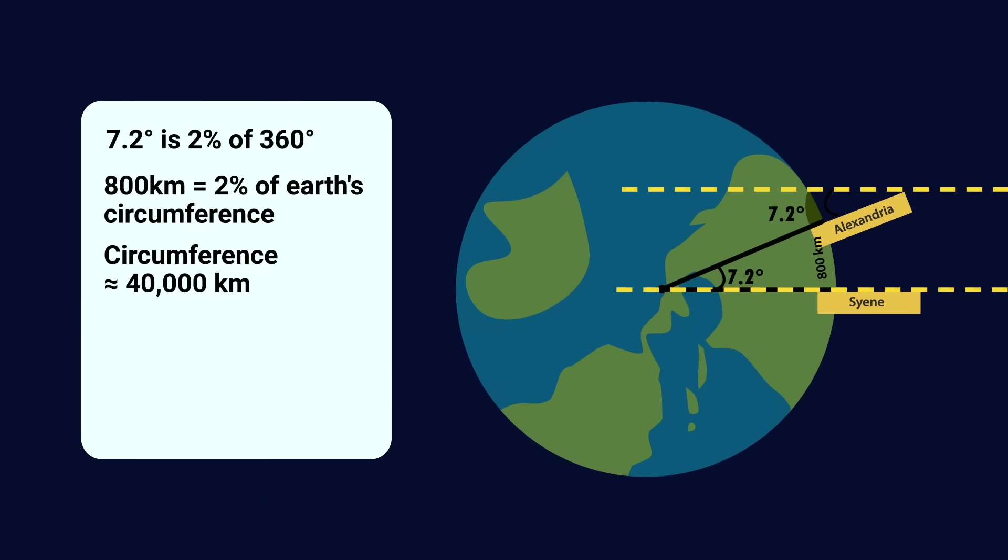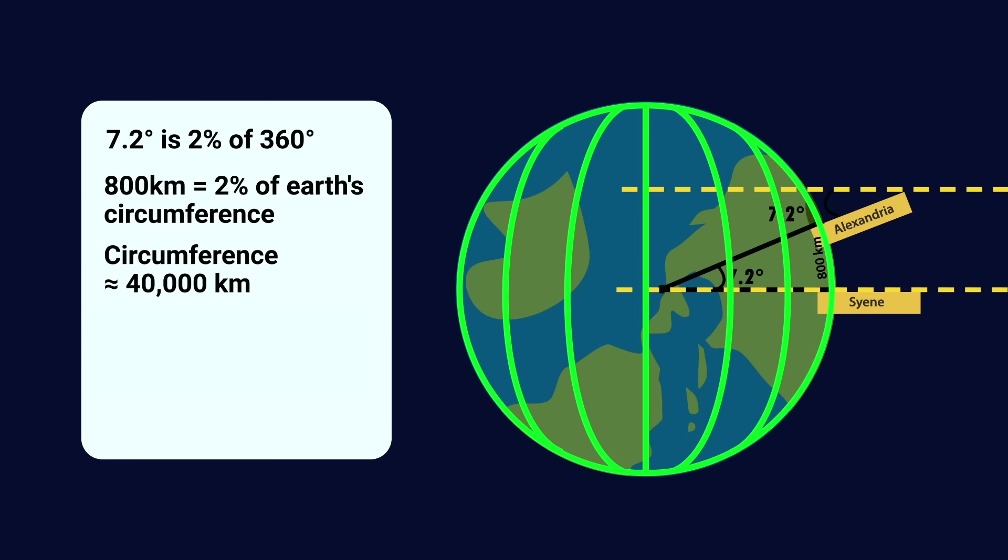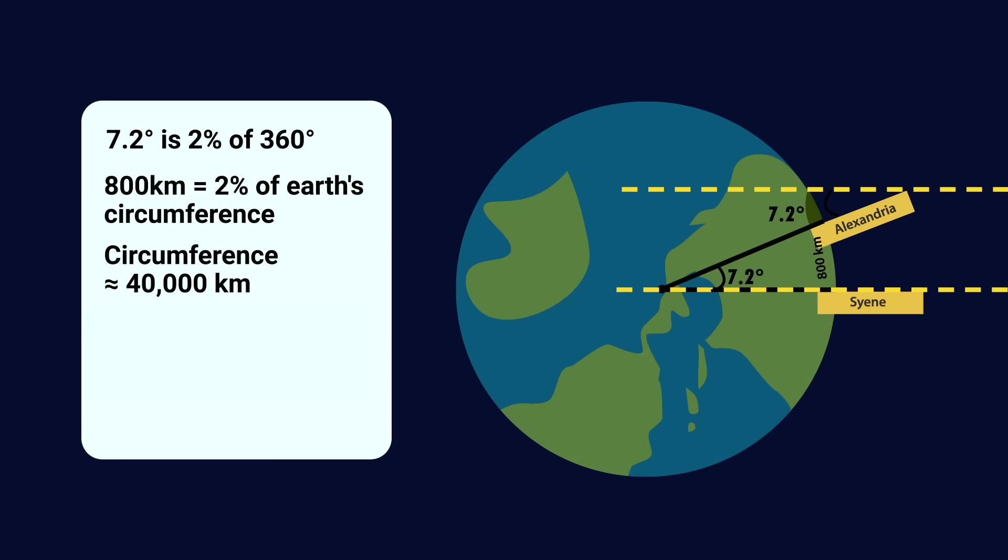Now, two things to note. First, this only works if the cities are on the same longitude line. Or said another way, they're directly north and south of one another. These cities are not, but they're pretty close. So that's one reason for the error, along with human measurement.